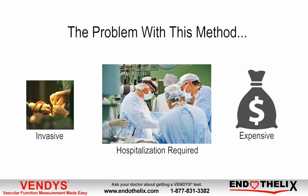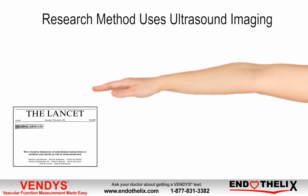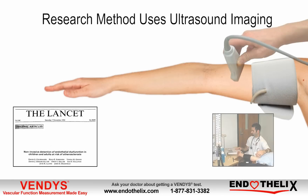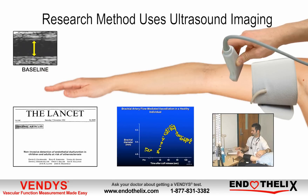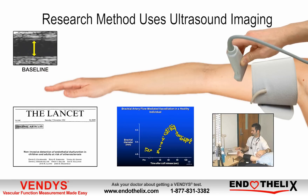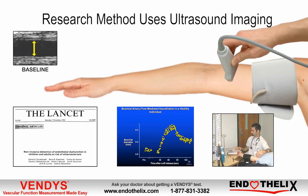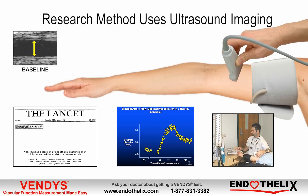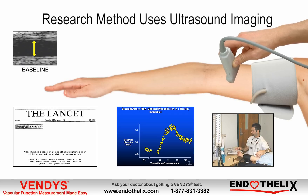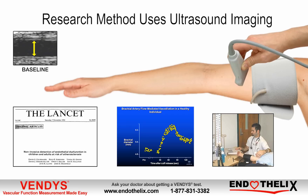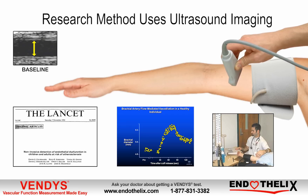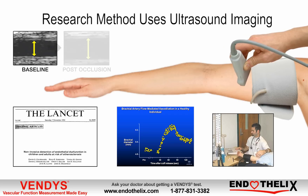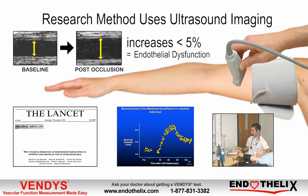Obviously, this technique is very invasive, requires hospitalization, is very expensive, and is not justified for apparently healthy or asymptomatic people. In 1992, scientists developed a research technique for assessing endothelial dysfunction using high-resolution ultrasound imaging of the brachial artery. This technique requires a five-minute occlusion and release of brachial artery blood flow using a blood pressure cuff — also called a reactive hyperemia procedure — and manually measuring the diameter of the brachial artery using a high-frequency ultrasonic imaging probe.